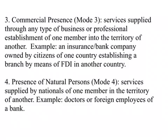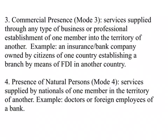The third type of trade in services is commercial presence, or Mode 3. This means services supplied through any type of business or professional establishment of one member in the territory of another — for example, an insurance or banking company owned by citizens of one country establishing a branch through foreign direct investment in another country, such as Citibank opening a branch in India or China. This is an example of commercial presence, Mode 3.